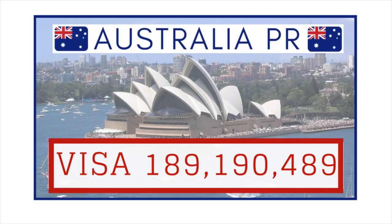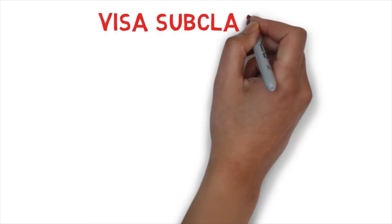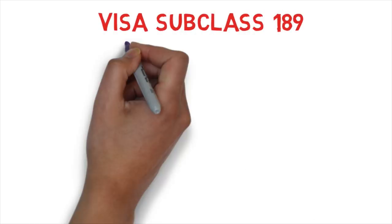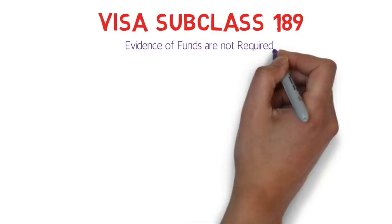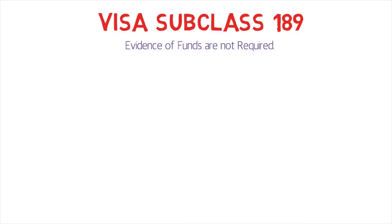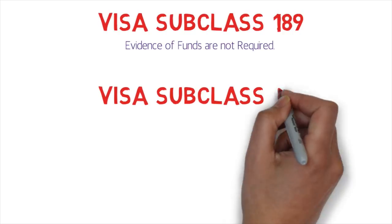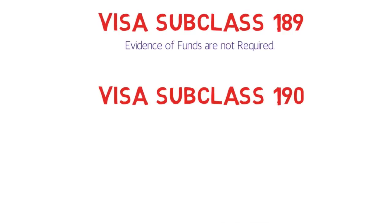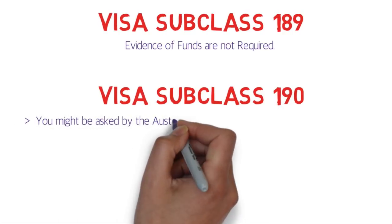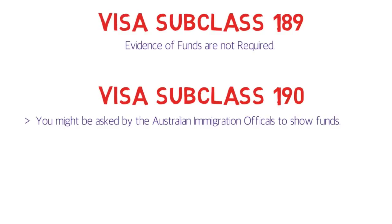If you're applying for visa subclass 189, evidence of funds is not required. You can live, work, and study anywhere in Australia and you do not need to prove settlement funds for this visa subclass. For visa subclass 190, if you are applying for this visa subclass then you might be asked by the Australian immigration officials to show some funds.